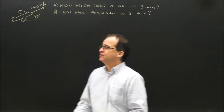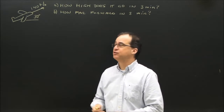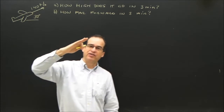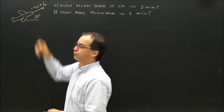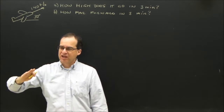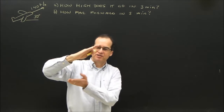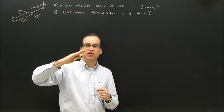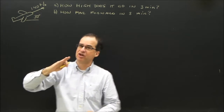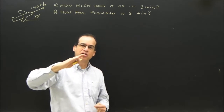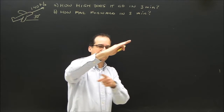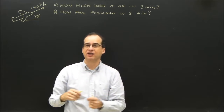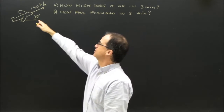This is a simple vector problem, just to show you how to split vectors up and use them for something. I've got an airplane flying at 30 degrees at 140 kilometers per hour. As the airplane flies like this, it's moving forward and it's moving up. The resultant vector — what the plane is actually doing — is 140. As it's going 140 this way, it's moving forward and up at certain rates that we can figure out by breaking it into components.